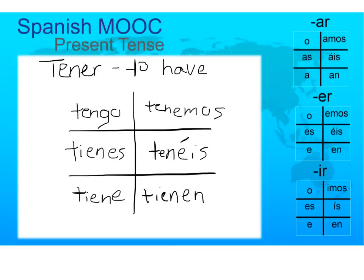We'll go through it one more time. Yo tengo. Tú tienes. Él tiene. Ella tiene. Usted tiene. Nosotros tenemos. Vosotros tenéis. Ellos tienen. Ellas tienen. Ustedes tienen. That's it for the verb tener.